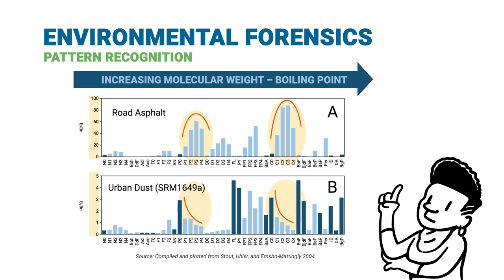Urban dust has lower absolute concentrations, a greater relative abundance of the parent PAHs, and higher relative concentrations of high molecular weight PAHs, showing the characteristic skewed shape of the alkyl homolog groups — a characteristic pyrogenic signature. In this example, urban dust represents background and asphalt is of interest. The signatures are a line of evidence in distinguishing between the two.